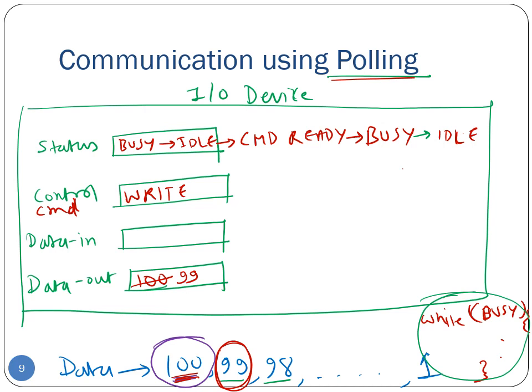This is how communication with I/O devices works with polling. The name 'polling' derives from the fact that in this paradigm, the device driver keeps reading the busy bit in the status register until it becomes clear — essentially the host is busy-waiting or polling.